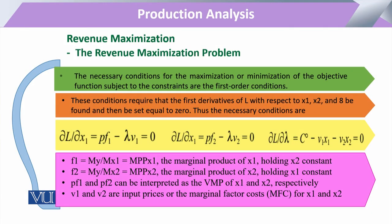When we have this Lagrange function to maximize, we will see the necessary conditions. The necessary conditions require the first derivative equal to zero. If we go to sufficient conditions, we go to the second derivative. Considering the first derivatives, we differentiate this function individually — first with respect to input X1, then with respect to input X2, and then with respect to lambda. When we differentiate this equation, this is the change in Lagrange with respect to the change in input 1, and it will be equal to the following.